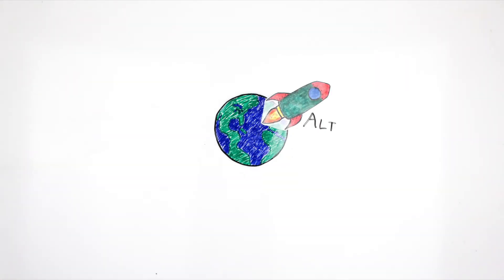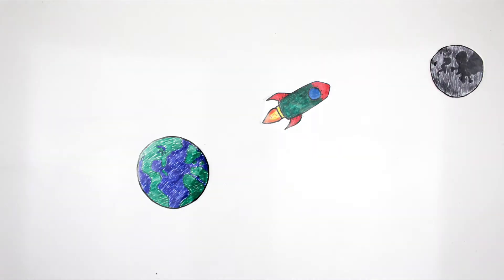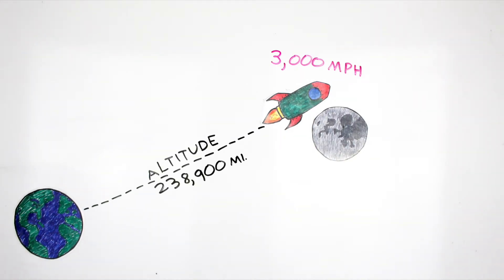At the Earth's surface, escape velocity is about 25,000 miles per hour, but this value changes due to distance. At the altitude of the Moon, it's only 3,000 miles per hour.